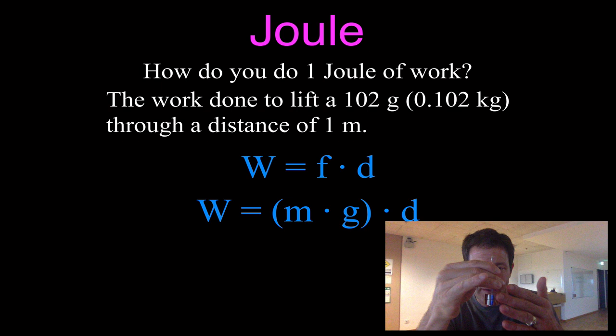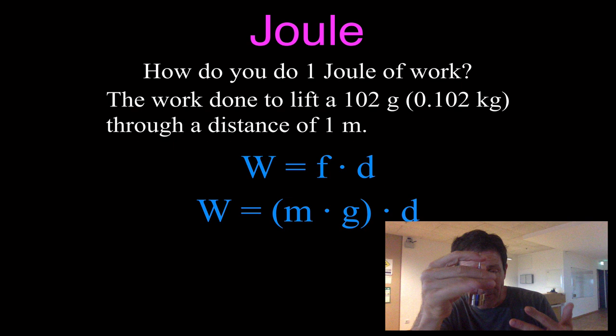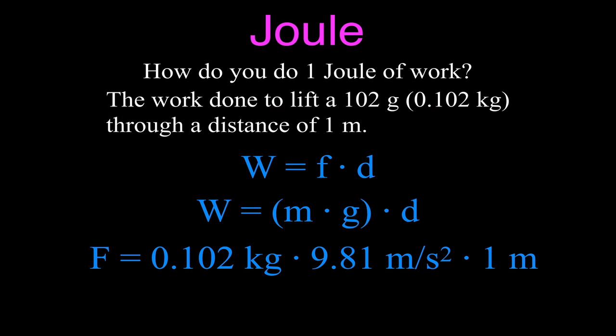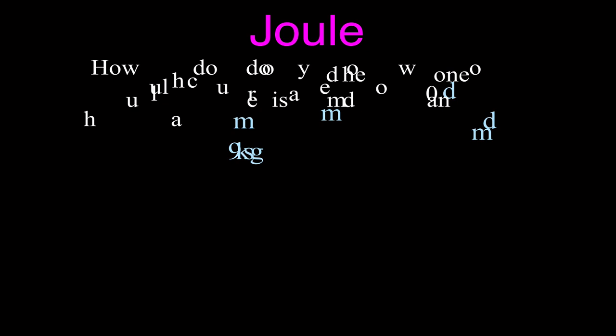Work is force times distance, and since the force equals mass times acceleration due to gravity, we can calculate work done lifting against gravity. The mass is 0.102 kilograms — mass must be in kilograms, the base unit in the metric system. The acceleration due to gravity at Earth's surface is 9.81 meters per second squared. Lifting that mass through one meter gives us one joule of work.